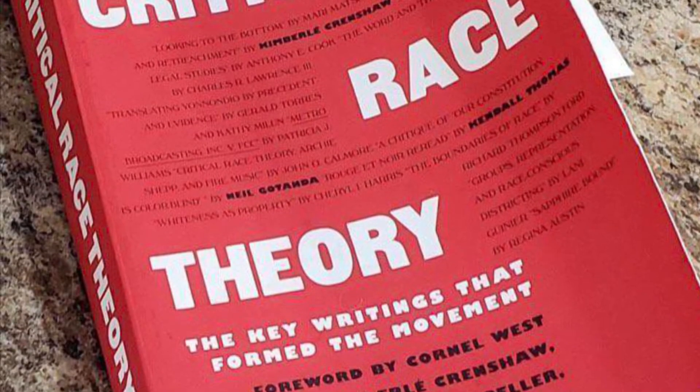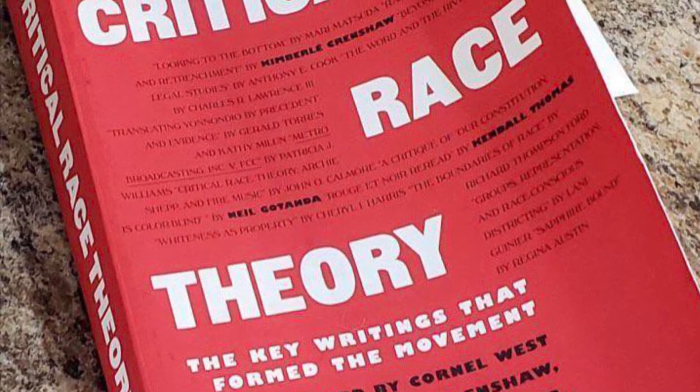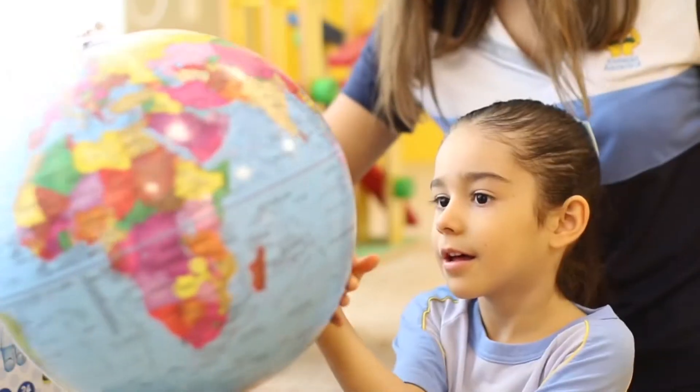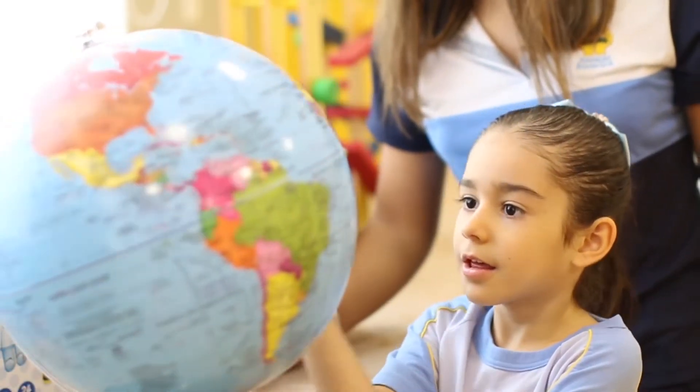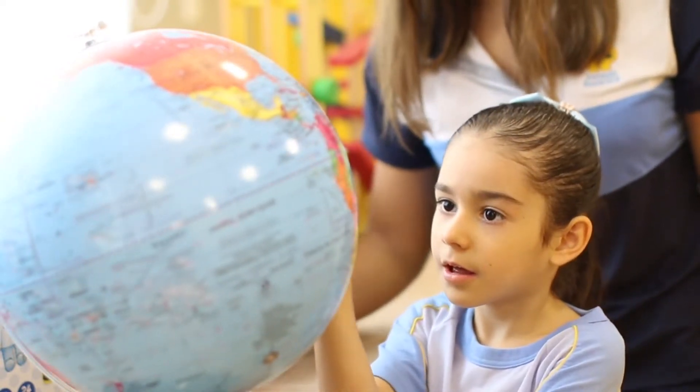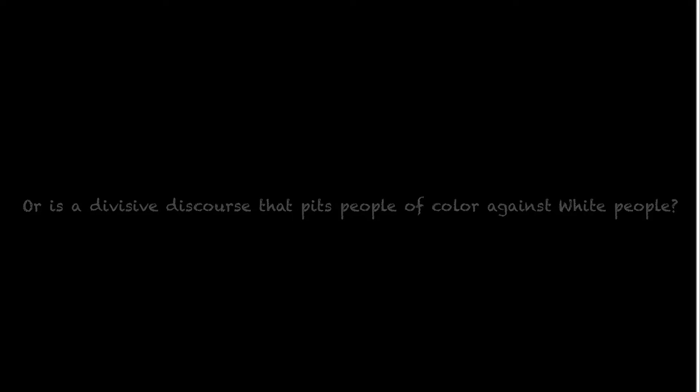Although as a concept it has been around for over 40 years, critical race theory has recently become a controversial topic. This topic exploded in the public arena, especially in K-12, where numerous state legislatures debated bills seeking to ban its use in the classroom. In this modern context, a bifurcated set of questions quickly emerge: Is critical race theory a way of understanding how American racism has shaped public policy, or is it a divisive discourse that pits people of color against white people?